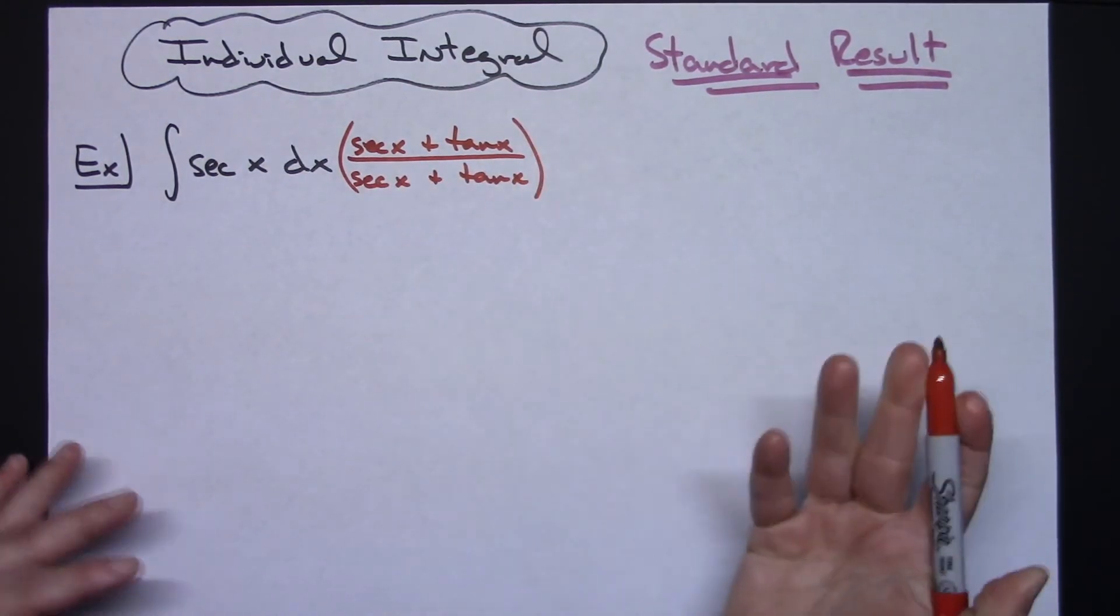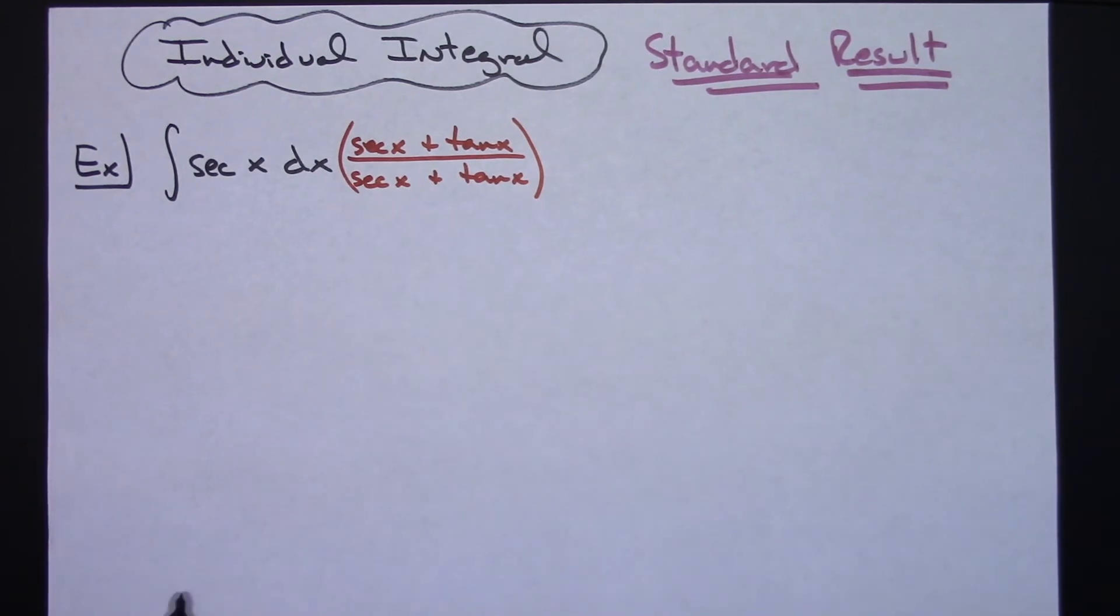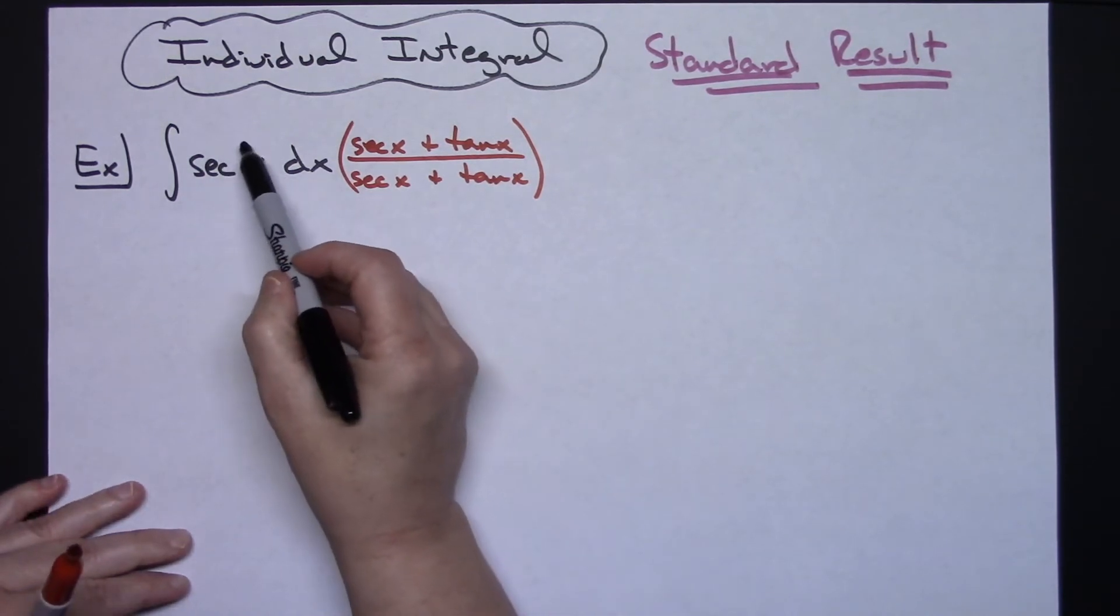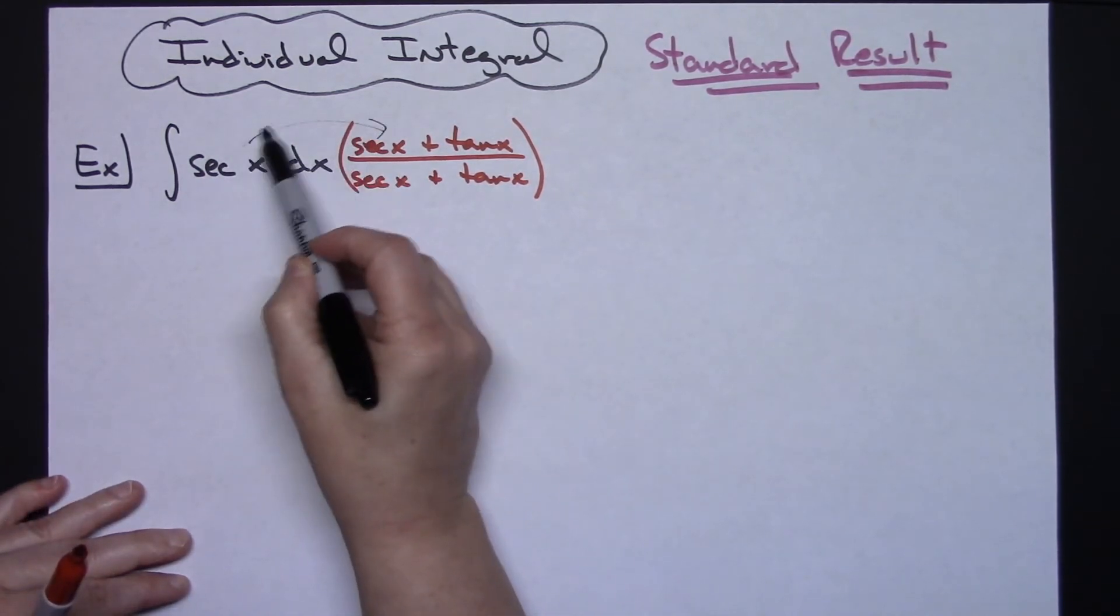Now that's the trick. You've got to know that this is what you've got to do to make the u substitution work. Now when I do choose to multiply, I can take this and distribute across the top.